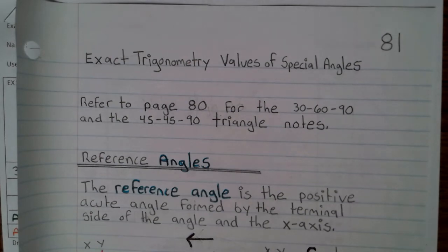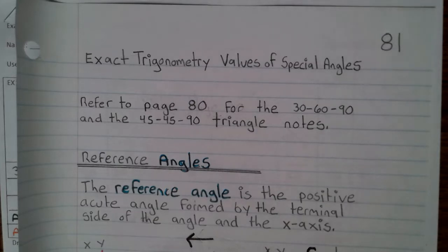Today we're looking at journal page 81, exact trigonometry values of special angles. Refer to page 80 for the 30-60-90 and 45-45-90 triangle notes.